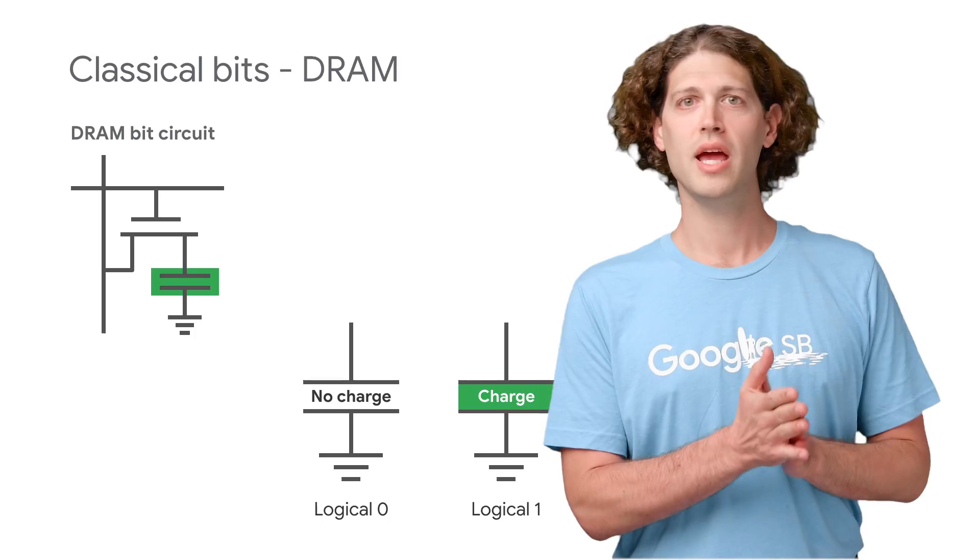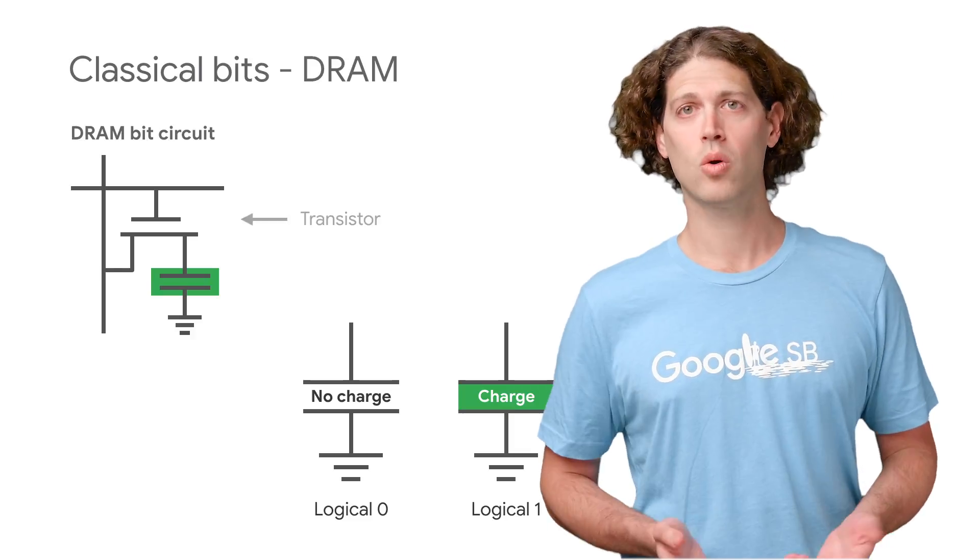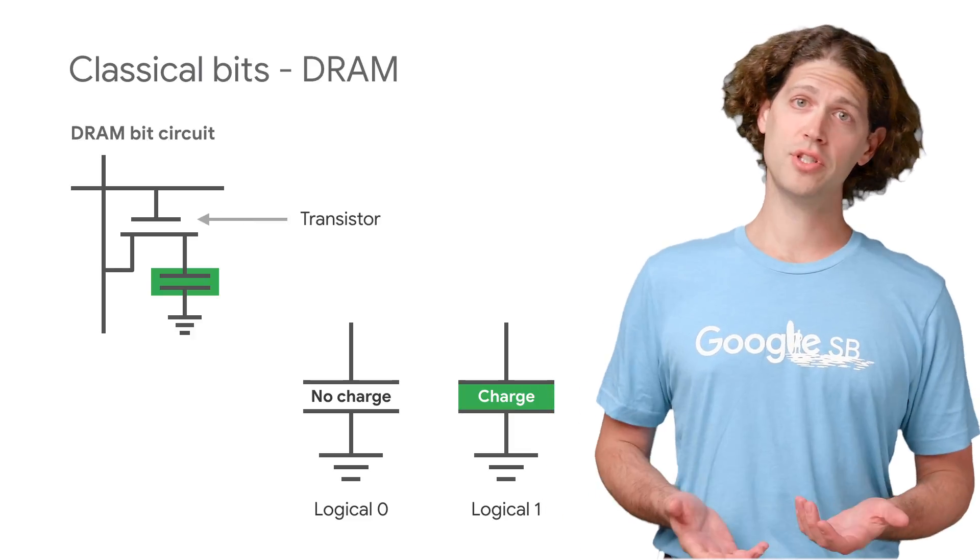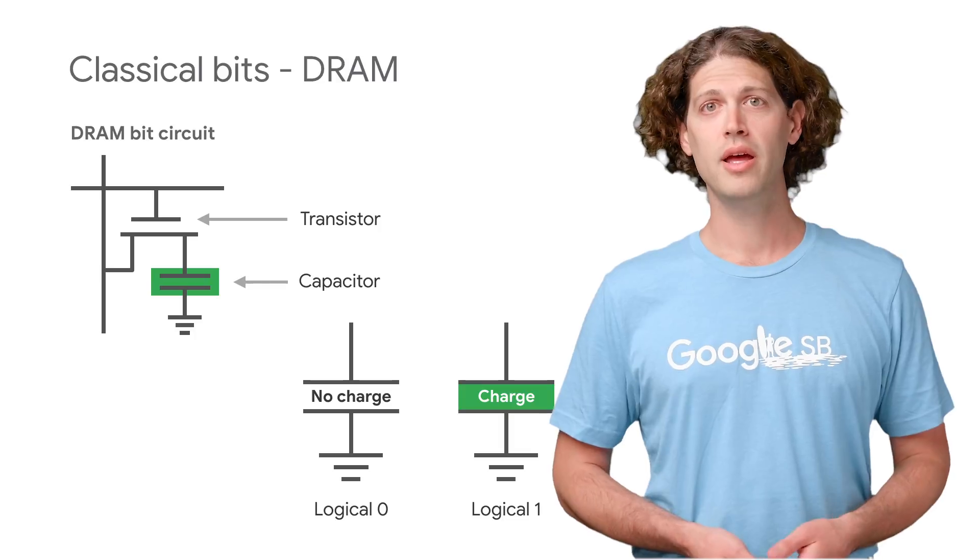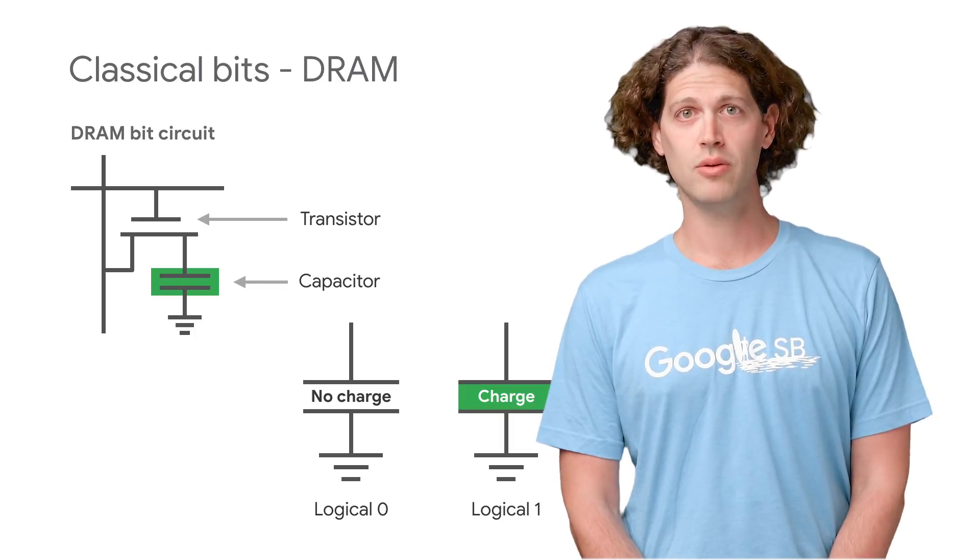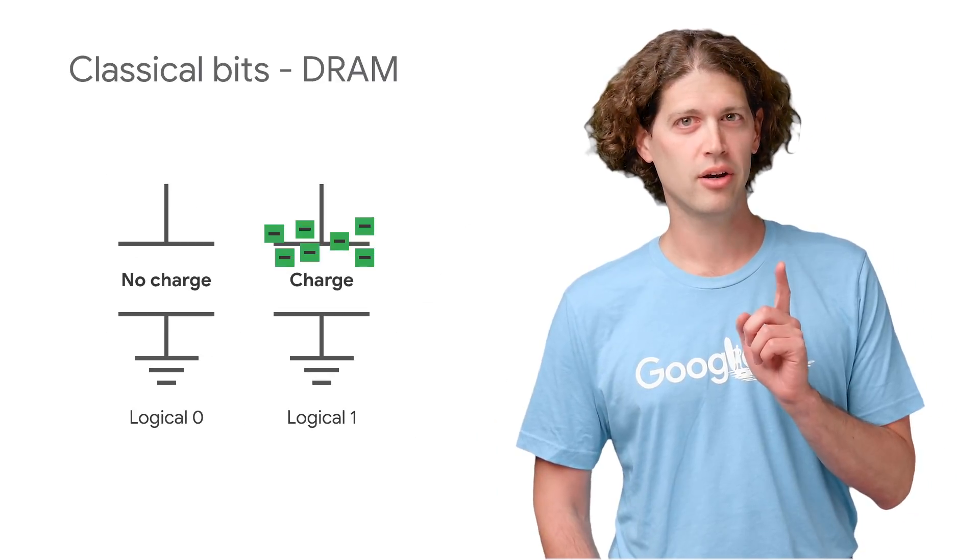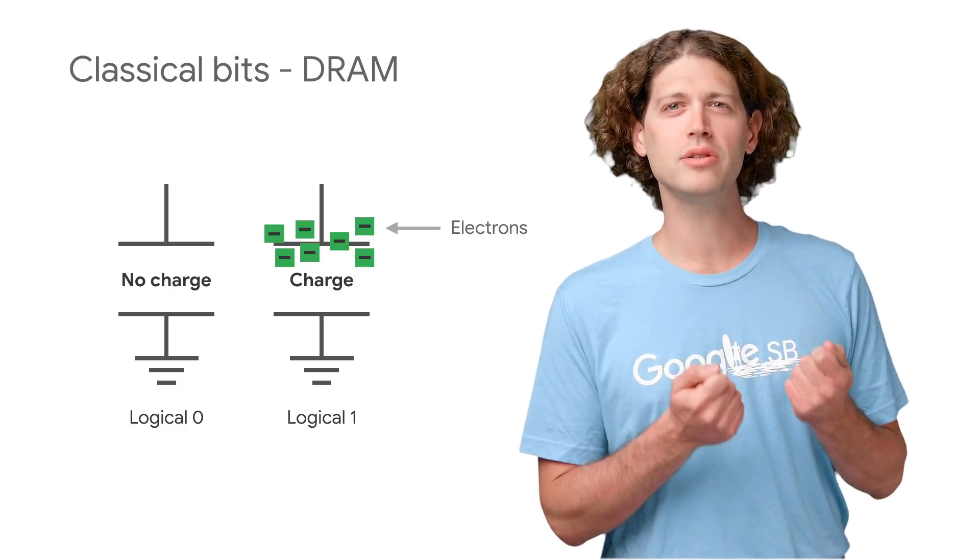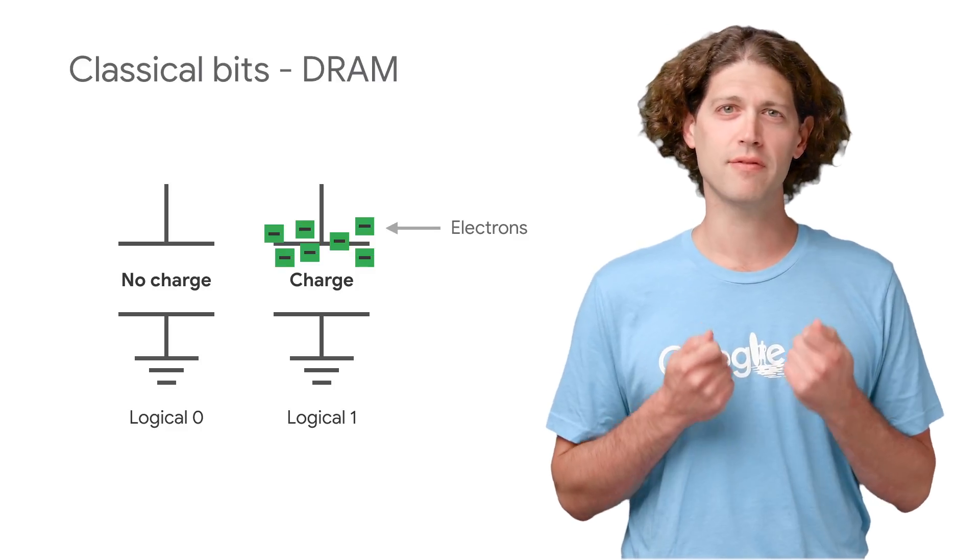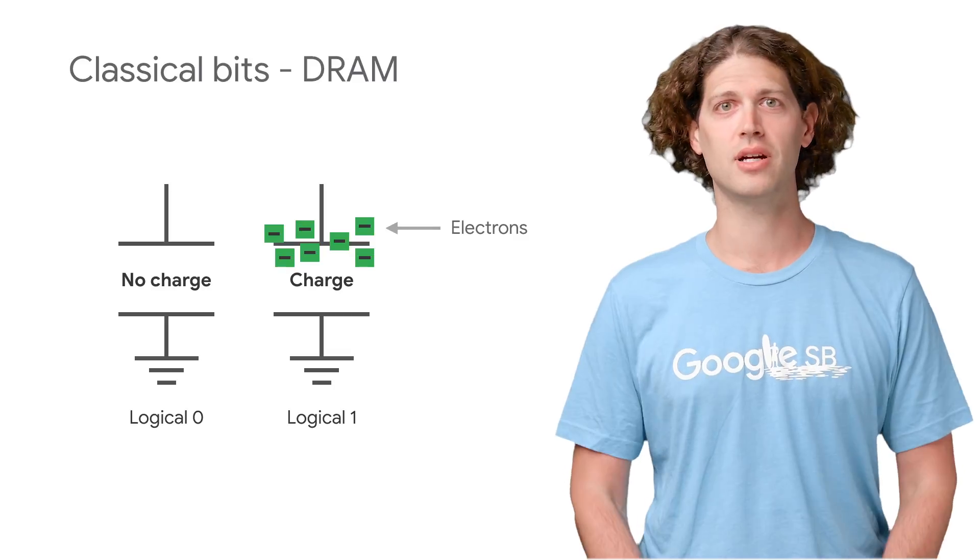Classical computer bits are stored in the presence or absence of charge on a capacitor in a circuit called dynamic RAM, or DRAM for short. If there's charge, it's a logical one. And if there's no charge, it's a logical zero. But there's more going on here.